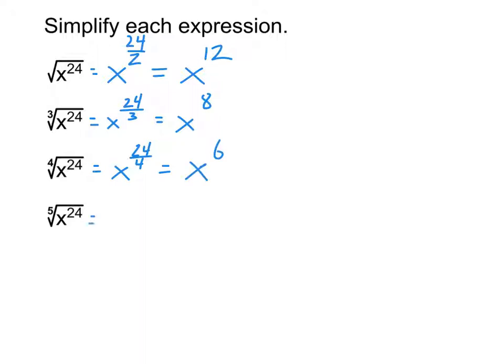And then the last one, same process here, where we turn it into x to the power of 24 over 5. And then we have a little bit of a problem. Because 24 over 5 is not a whole number. So what do we do with that? And that's going to be today's new lesson. This is what we're getting into today is what happens when it doesn't work out to just be a whole number.